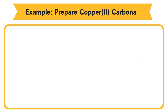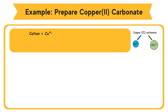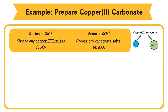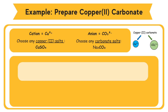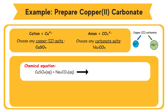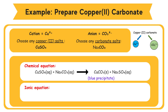Example: Prepare copper(II) carbonate. Cation equals Cu2+; choose any suitable copper(II) salts such as copper(II) sulfate CuSO4(aq). Anion equals CO3²⁻; choose any carbonate salts such as sodium carbonate Na2CO3(aq). When the two salt solutions are mixed, a blue precipitate of copper(II) carbonate is formed. CuSO4(aq) + Na2CO3(aq) → CuCO3(s) + Na2SO4(aq). Ionic equation: Cu2+(aq) + CO3²⁻(aq) → CuCO3(s).